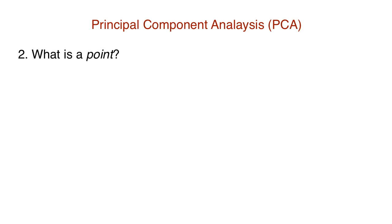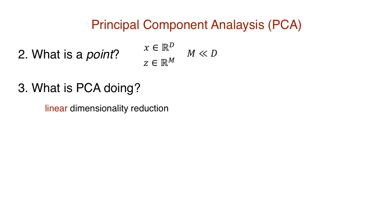Now what is a point? Let a point x be a vector in a very high dimensional space d. We want to reduce this dimensionality by projecting it onto a lower m dimensional space. So what is PCA doing? PCA is a method of linear dimensionality reduction. So using a linear transformation U on an input x, we should be able to transform it into some z in the reduced feature space.